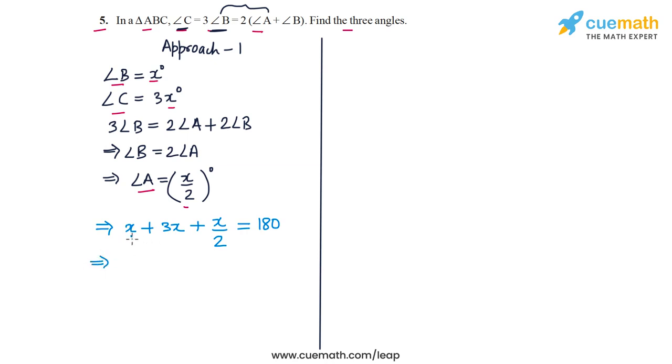And what do I get here? I get x plus 3x is 4x and 4x plus x by 2 is 9x by 2. So 9x by 2 should be equal to 180 or x should be equal to 180 into 2 by 9 or 40.